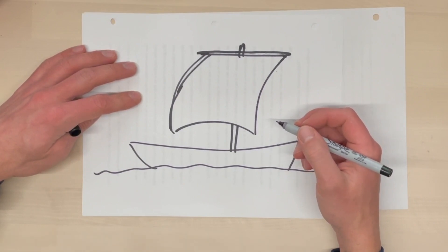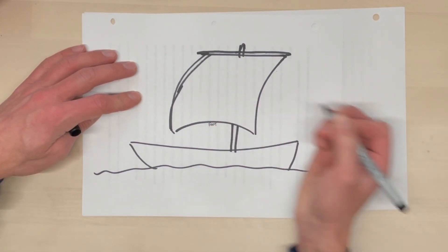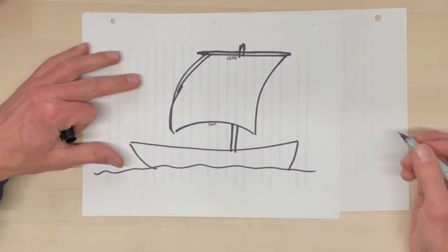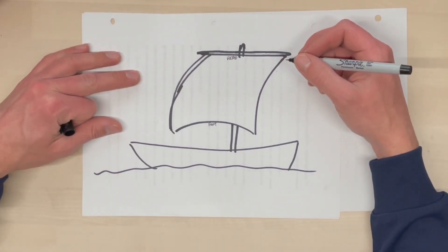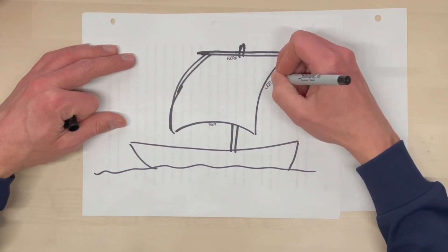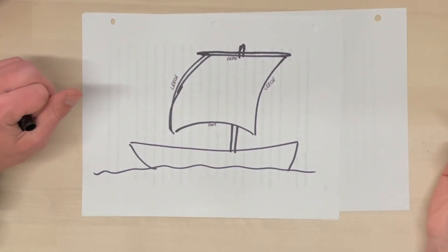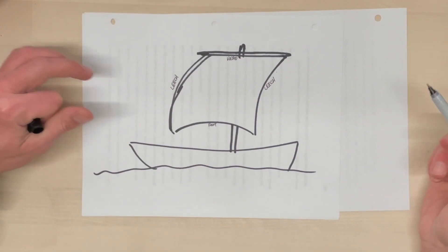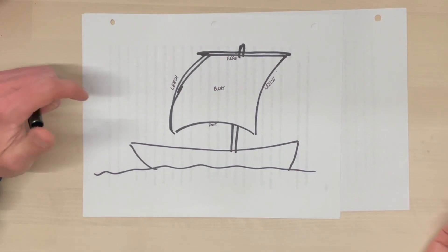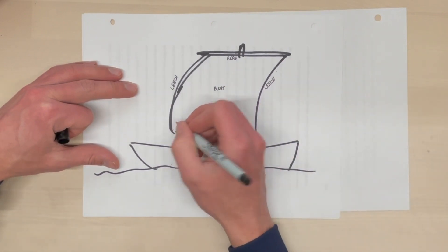This is our square sail. The bottom edge of the sail is the foot. The top edge of the sail is the head. The left and right edges of the sail are generally referred to as the leech. The body or middle of the sail is referred to as the bunt. And the bottom corners of the sail are called the clue.